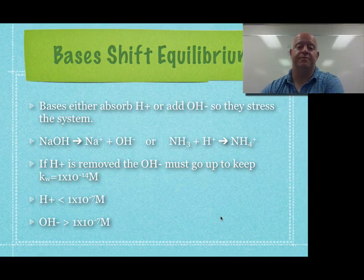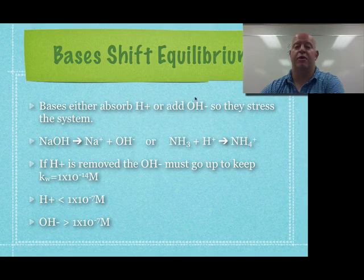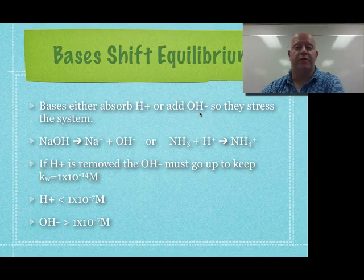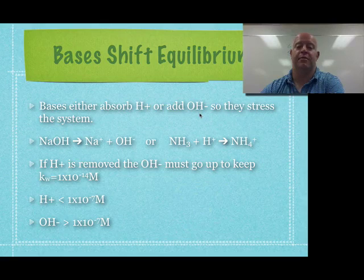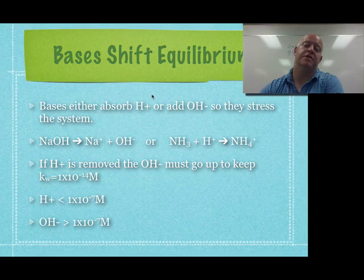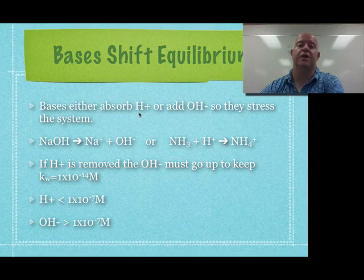Now if you do a base, there's two things that can happen for a base. Either they absorb H-plus or they add OH-minus. Now if you go back to our definitions, for an Arrhenius-type base, we're always dealing with OH-minus. So the original definition of base is saying, hey, as long as you add OH-minus in, you've got a base. Well, that applies here. But then Bronsted-Lowry said, no, if they accept hydrogen ions, they're also a base because chemically they do the same thing. So let's take a look.